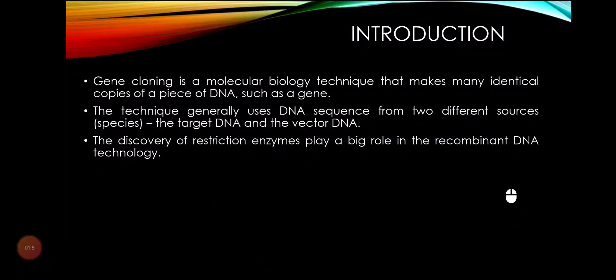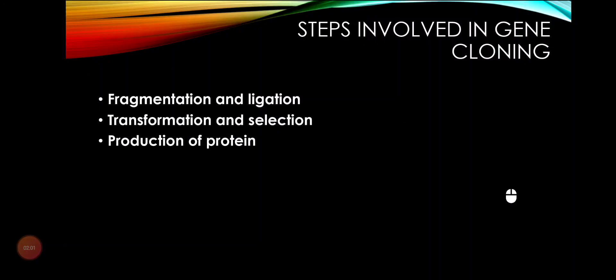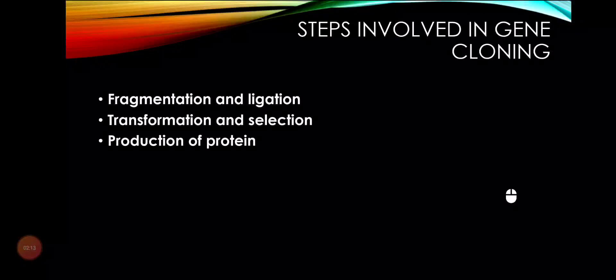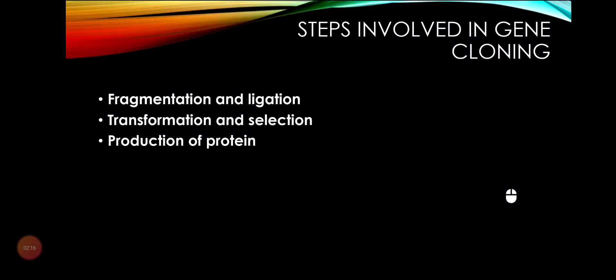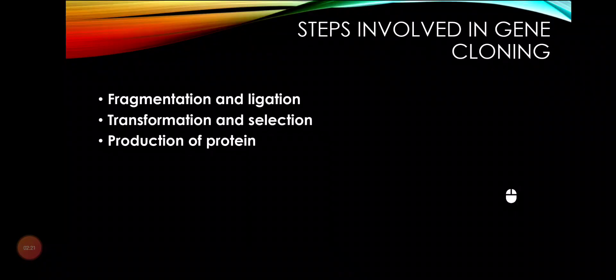Now let's look at the steps involved in gene cloning. The first step involves fragmentation and ligation. The second step is transformation and selection. The third step, which is sometimes not necessary, is the production of protein. We will discuss each step in detail later in this video.